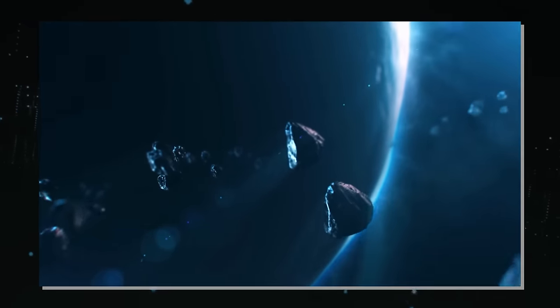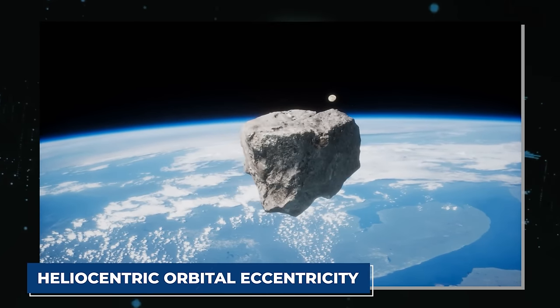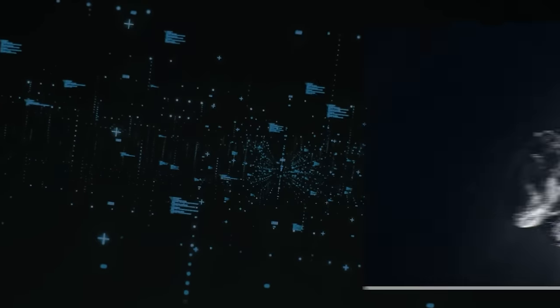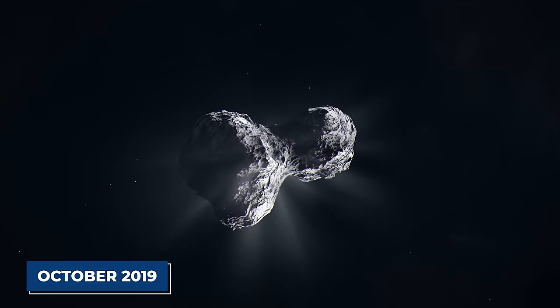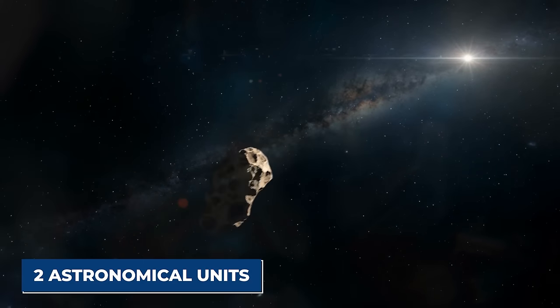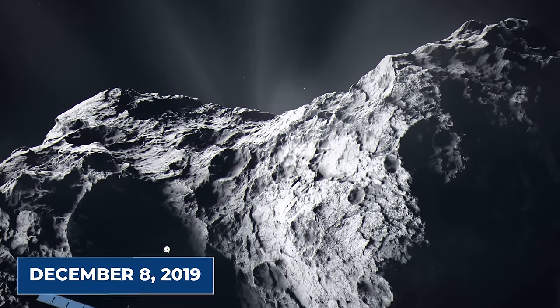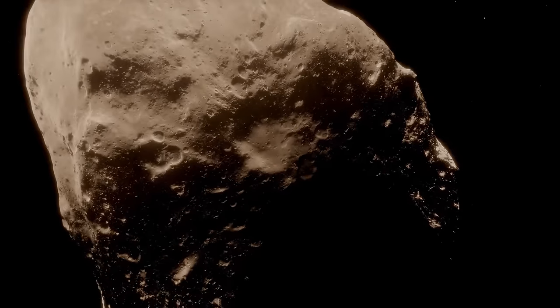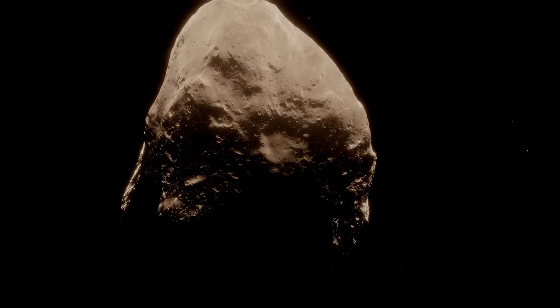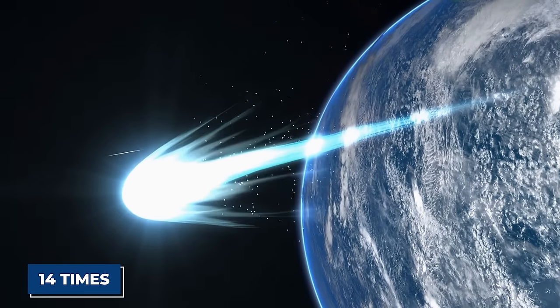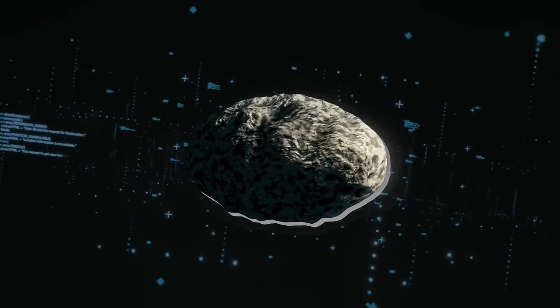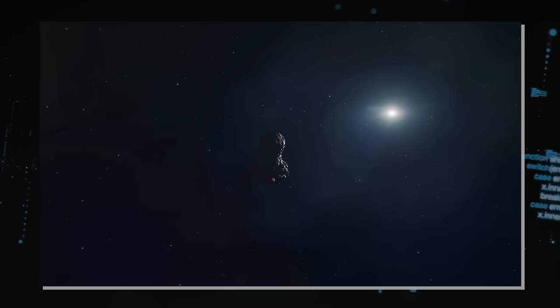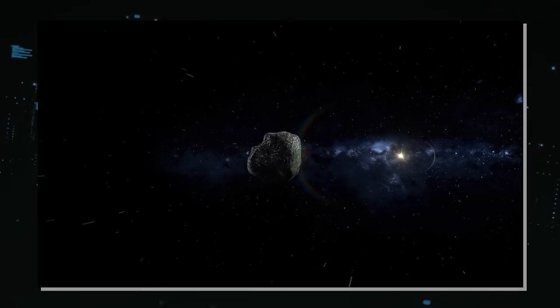Unlike typical comets bound to the Sun, 2i/Borisov boasts a heliocentric orbital eccentricity of 3.36, signifying its lack of allegiance to our solar system. It traversed the ecliptic of the solar system towards the end of October 2019, and reached its closest proximity to the Sun, just over two astronomical units away, on December 8, 2019. Notably, its closest encounter with Earth occurred on December 28, 2019. In November of the same year, astronomers from Yale University marveled at the comet's enormity, revealing that its tail spanned 14 times the size of our planet. They remarked on the profound, humbling experience of witnessing Earth's diminutive stature in comparison to this celestial visitor.